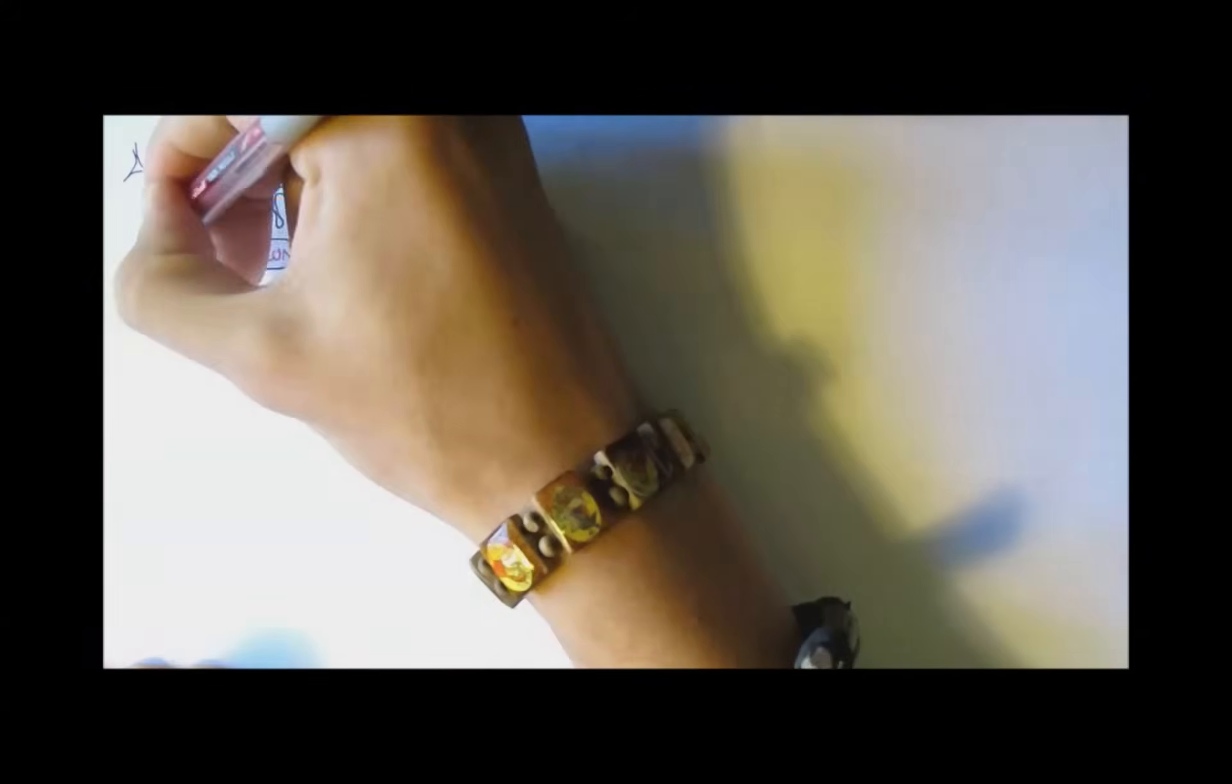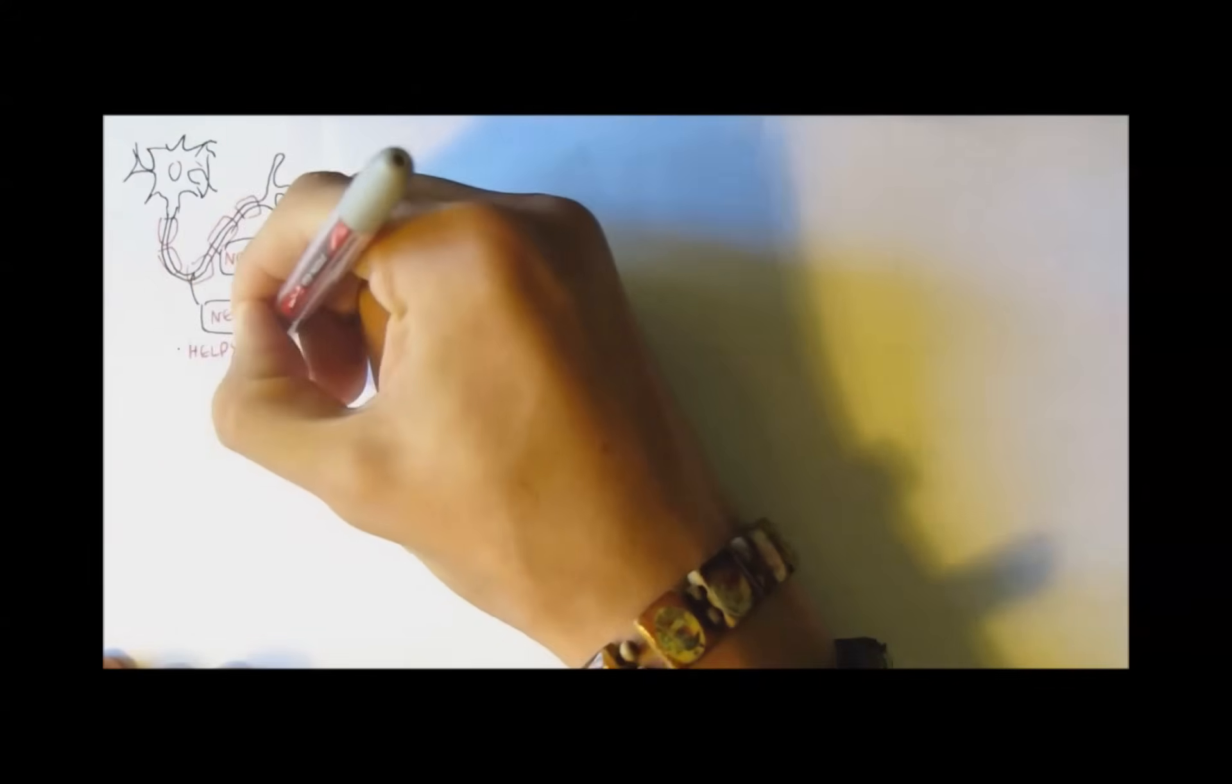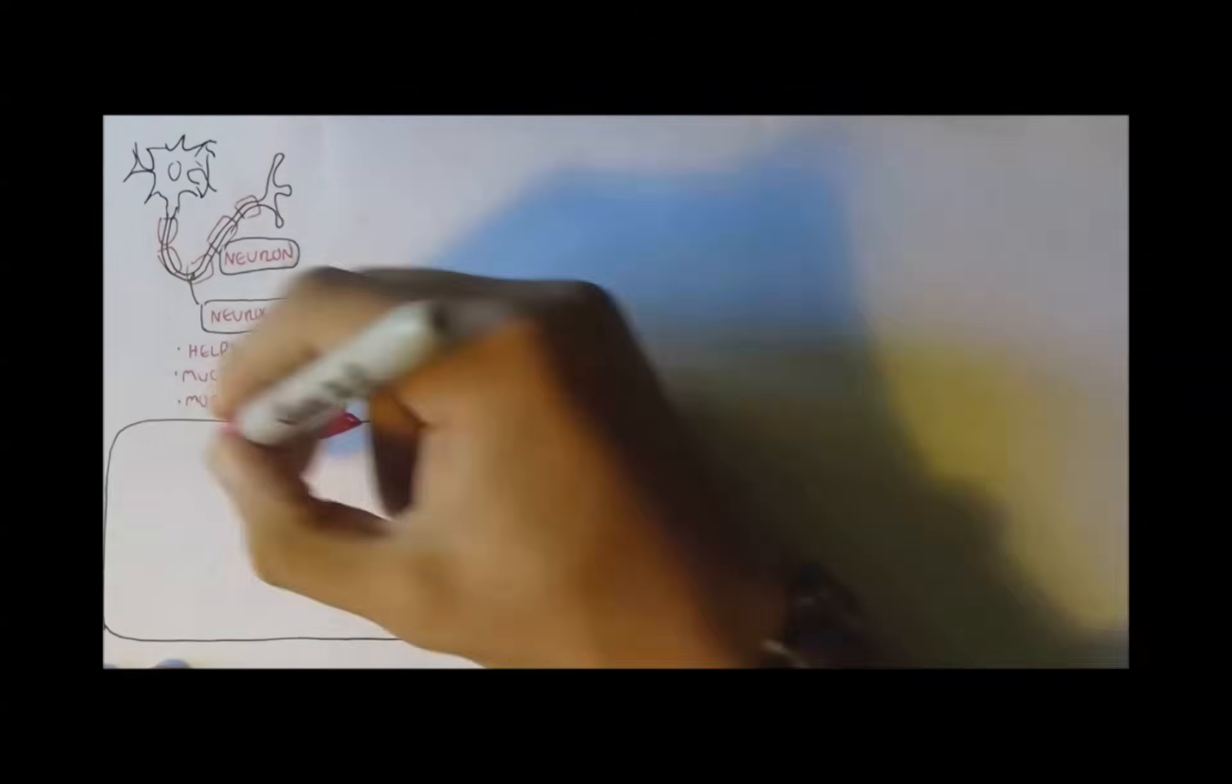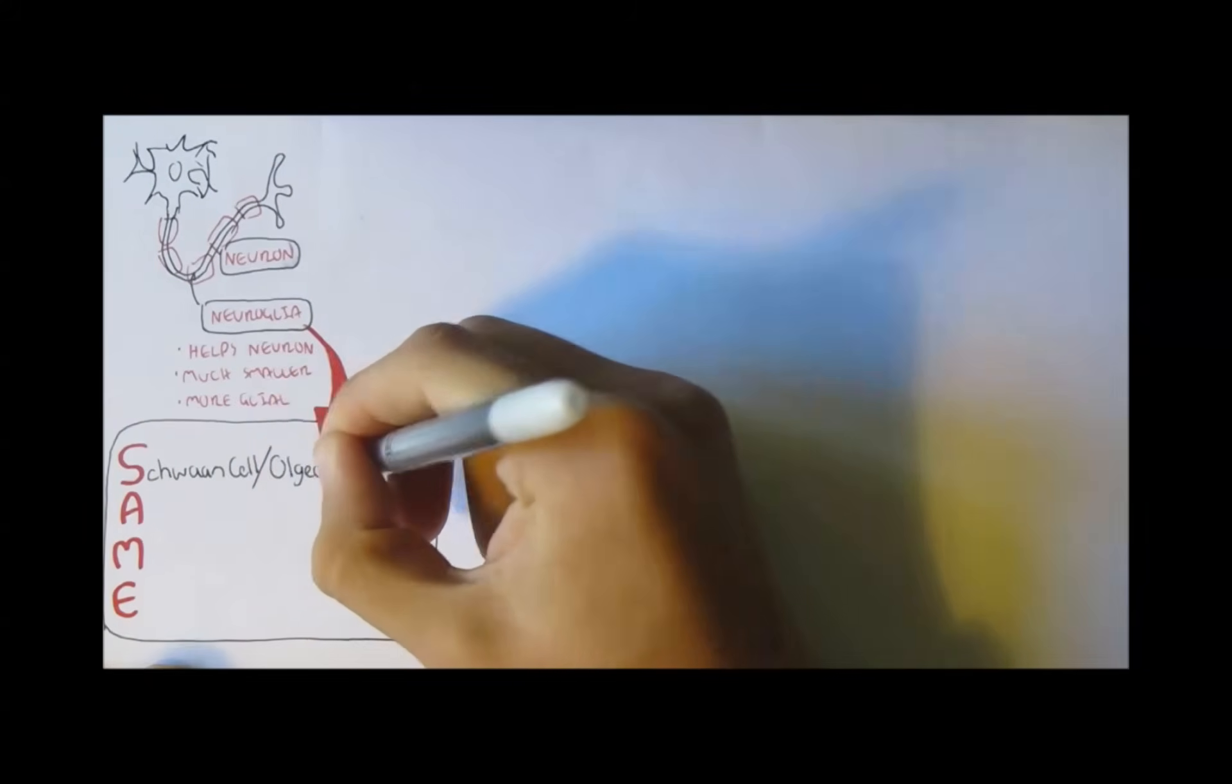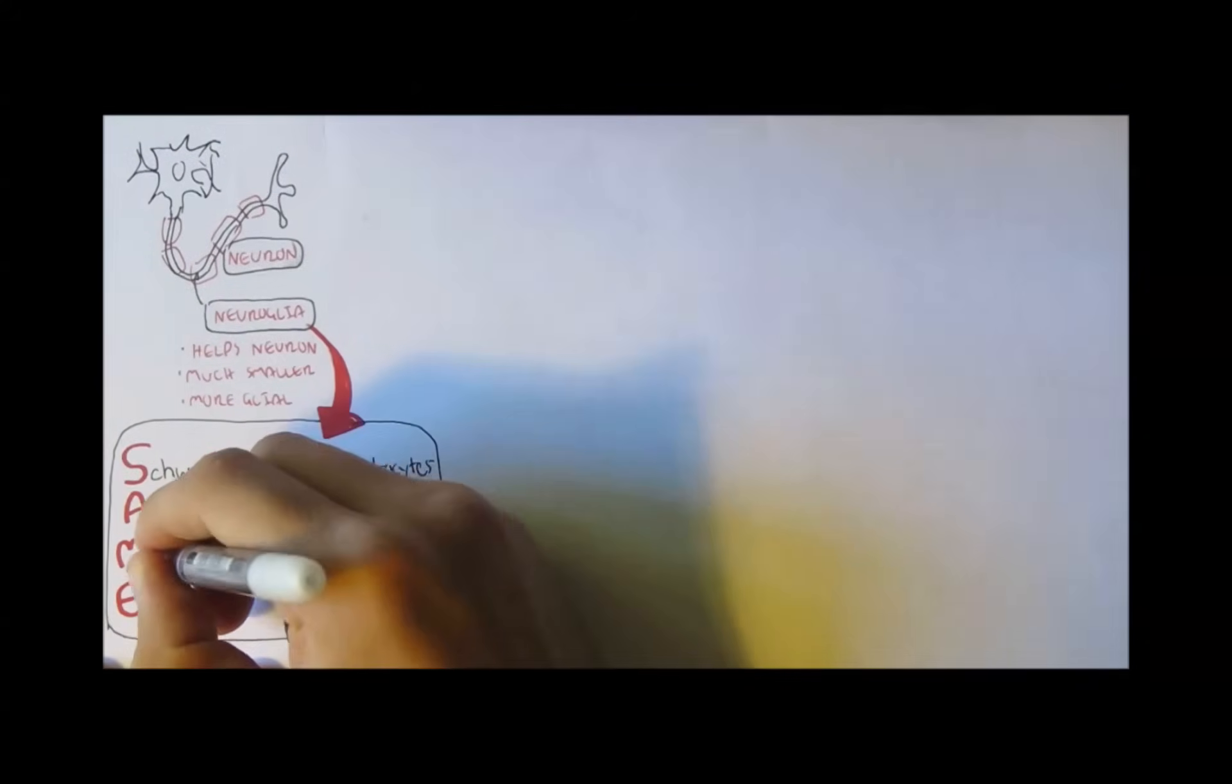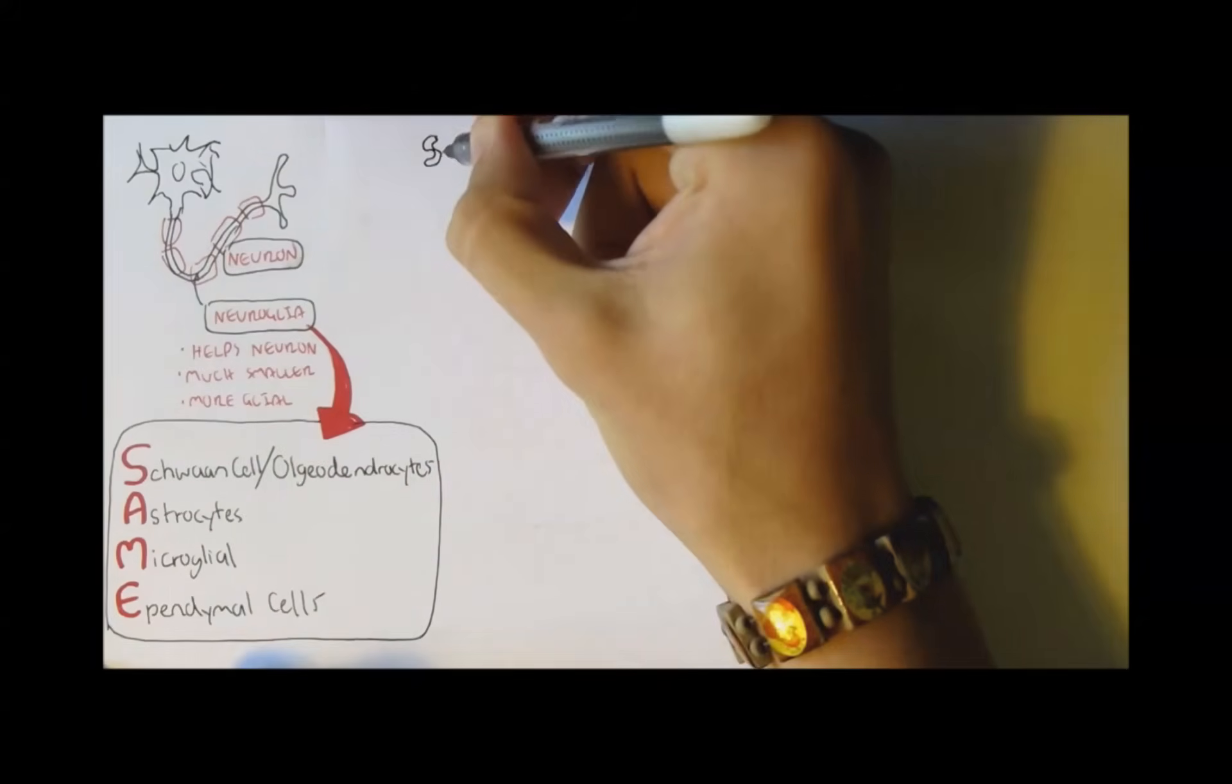Neurons and neuroglial cells. Now, neuroglial cells essentially help neurons. They are much smaller, but there are about three times more glial cells found in the body than there are neurons. Let's take a look at some important neuroglial cells. There are four. I remember them as SAME. S is for Schwann cells and oligodendrocytes. A is for astrocytes. M is for microglial cells, and E is for ependymal cells.